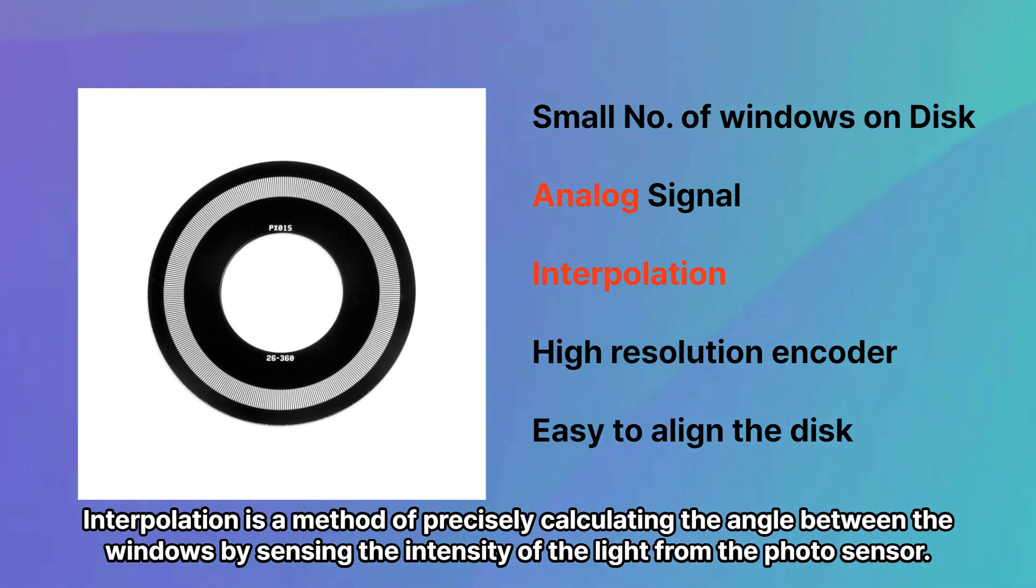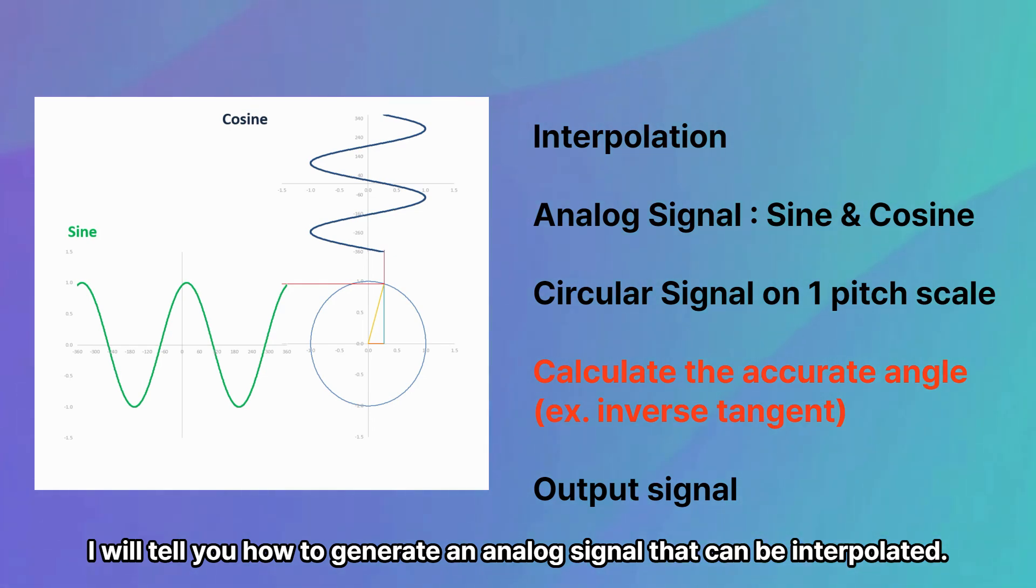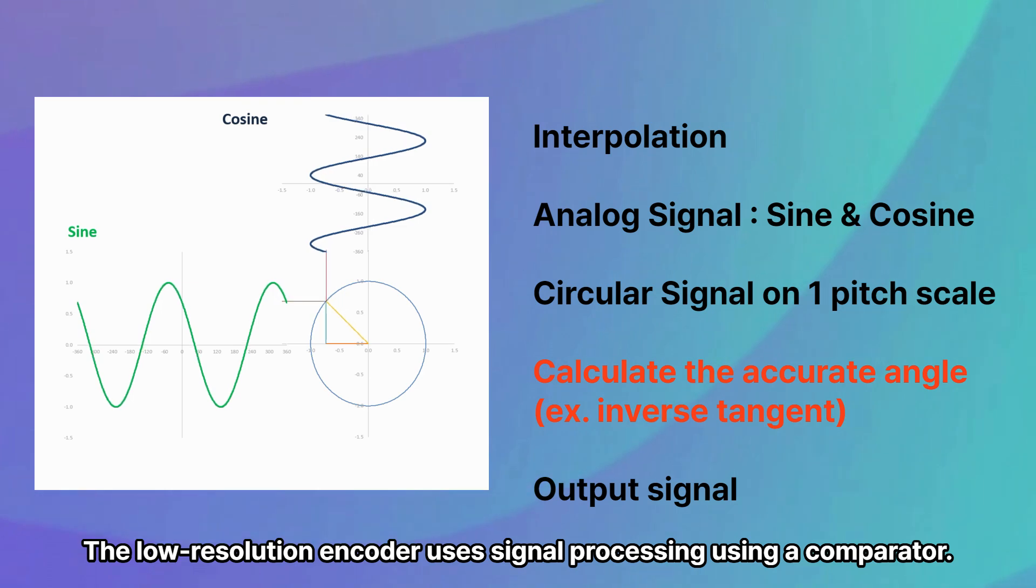Interpolation is a method of precisely calculating the angle between the windows by sensing the intensity of the light from the photosensor. I will tell you how to generate an analog signal that can be interpolated. The low-resolution encoder uses signal processing using a comparator.